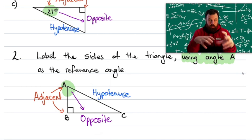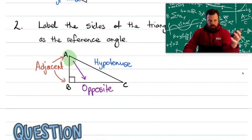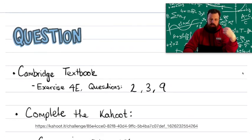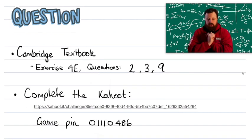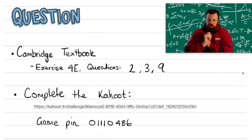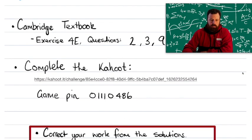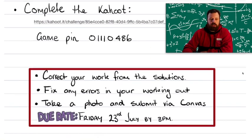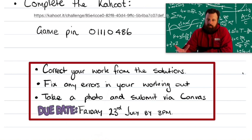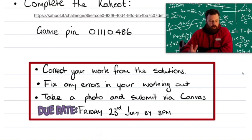The questions I'd like you to complete for this lesson: go to the Cambridge textbook, exercise 4E, and complete questions 2, 3, and 9 — do all parts of those questions. Once you finish that, follow the link to Kahoot and use the game pin shown to answer some similar questions. Finally, remember to submit your work — mark all your work from the solutions, and if you've made a mistake, go back to your working, fix those errors, take a photo, and submit that to Canvas by Friday by 3pm. Good luck with that, Year 9, and I'll catch you next time.